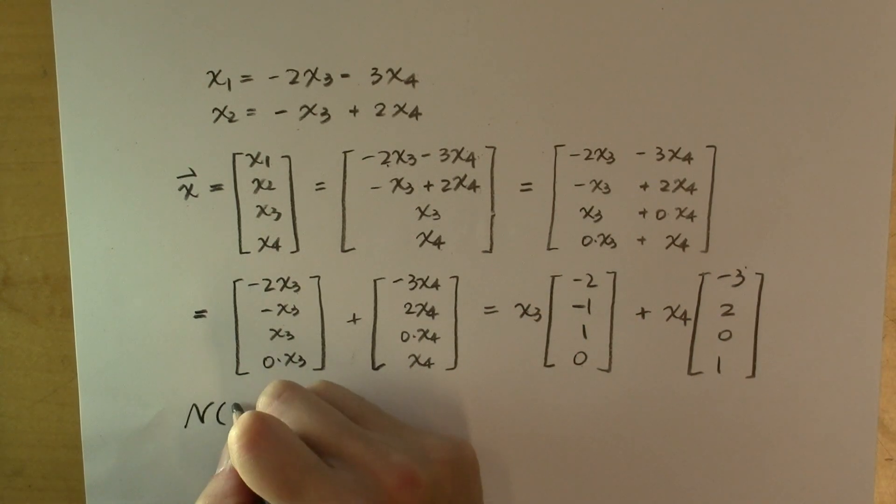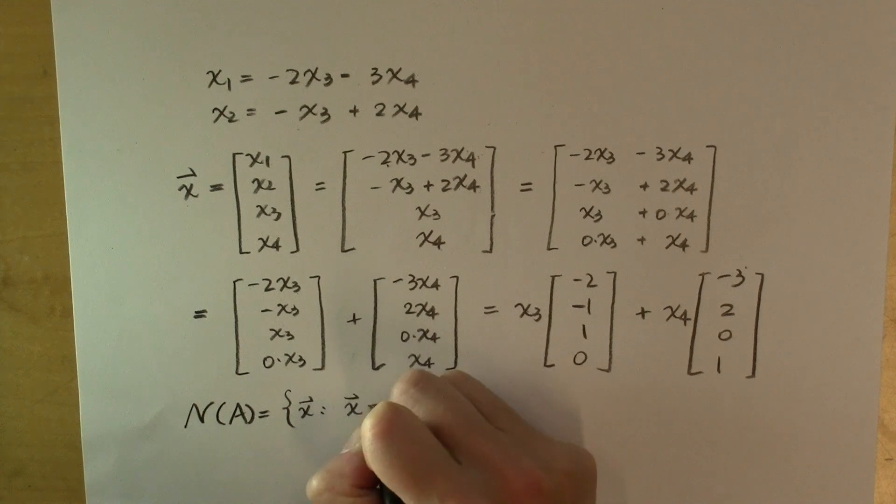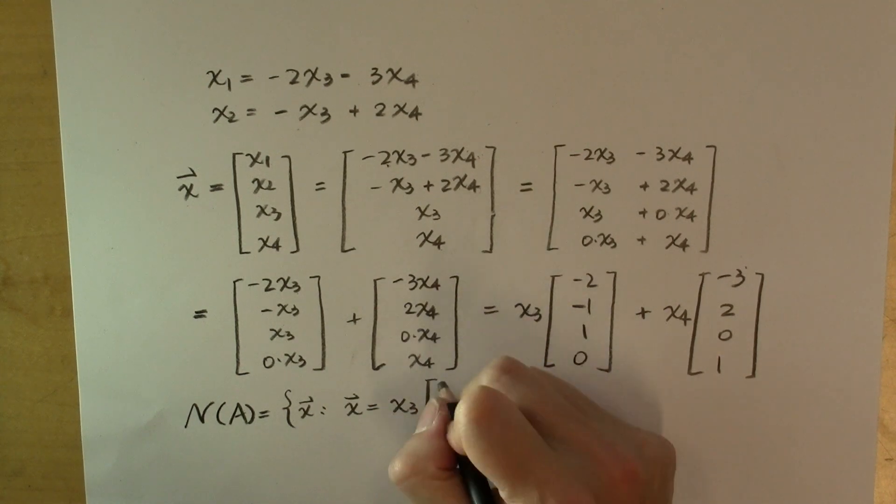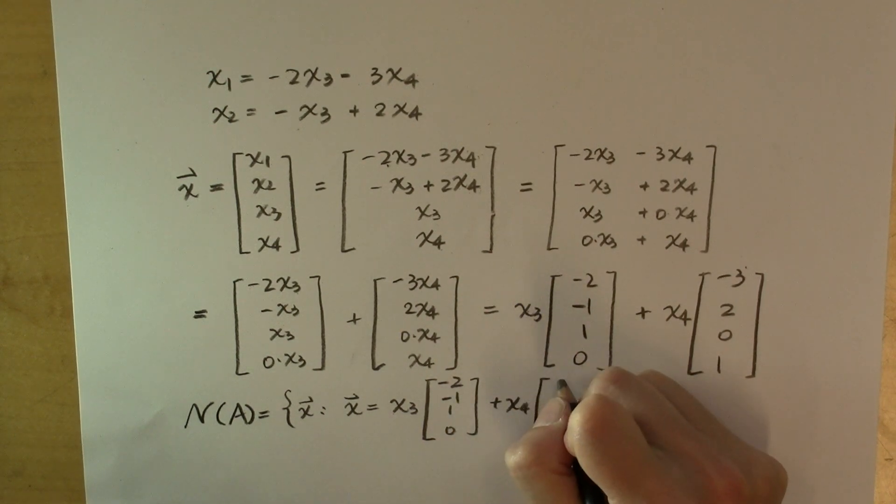So the null space of matrix A can be written as this set that contains all vectors x that can be expressed as a linear combination of the two vectors (-2, -1, 1, 0) and (-3, 2, 0, 1).